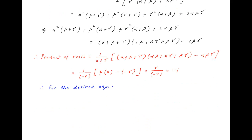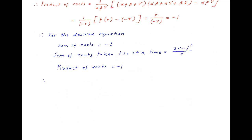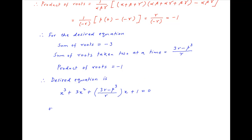To summarize, for the desired equation: the sum of the roots = -3, the sum of the roots taken two at a time = (3r - p³)/r, and the product of the roots = -1. Therefore the desired equation is x³ - (-3)x² + (3r - p³)/r · x - (-1) = 0, which gives x³ + 3x² + (3r - p³)/r · x + 1 = 0.